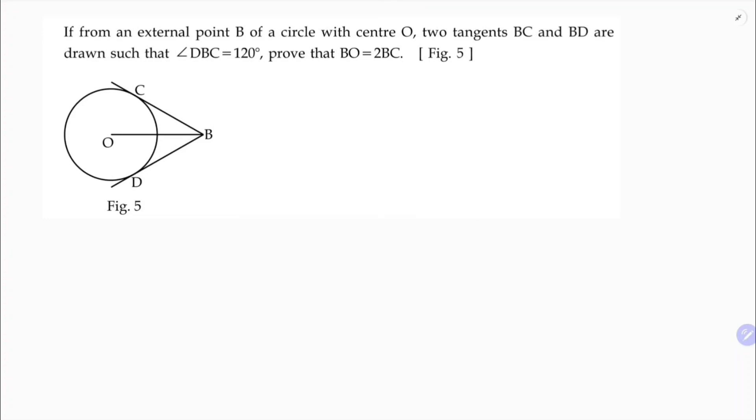If from an external point B of a circle with center O, two tangents BC and BD are drawn such that angle DBC—this total angle—is 120 degrees.